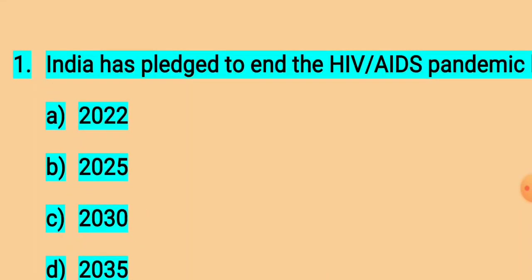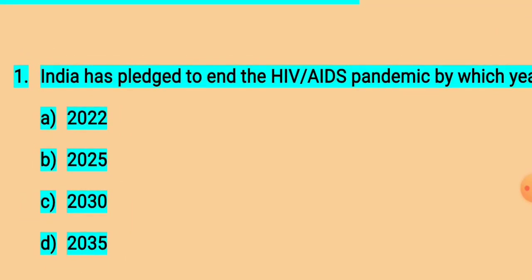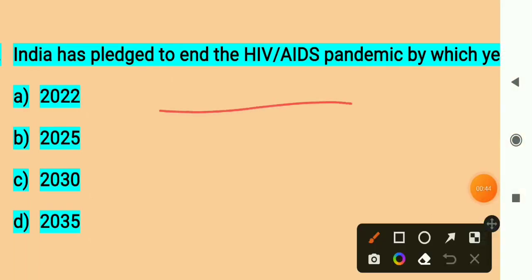Question number first. India has pledged to end the HIV AIDS pandemic by which year? By which year do we have to eradicate HIV? The correct answer is option C, 2030.